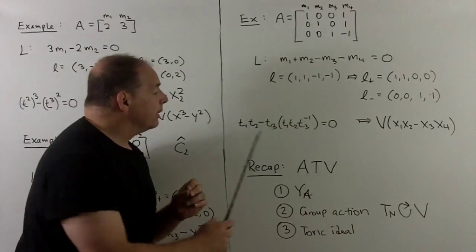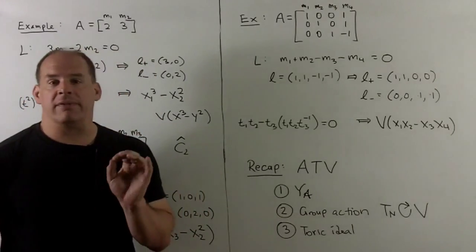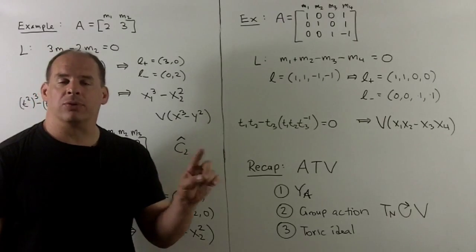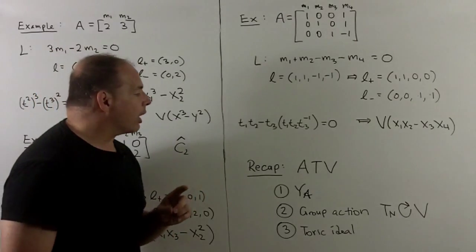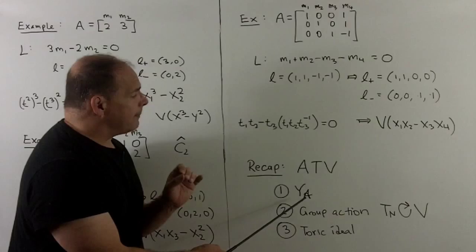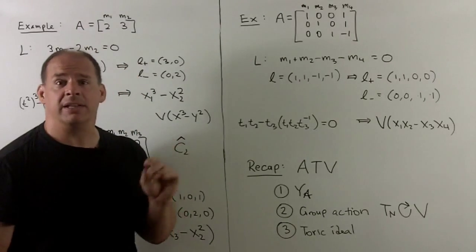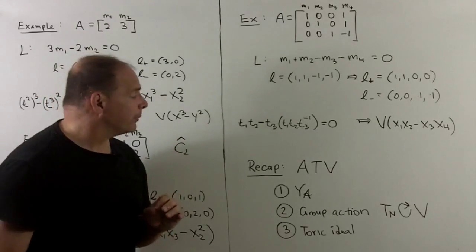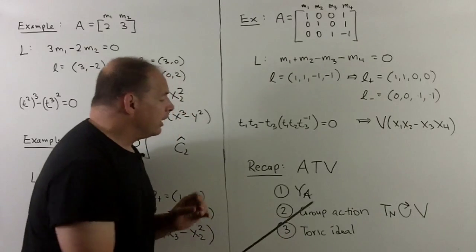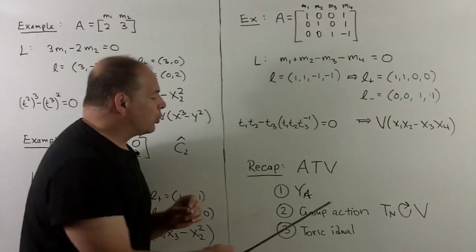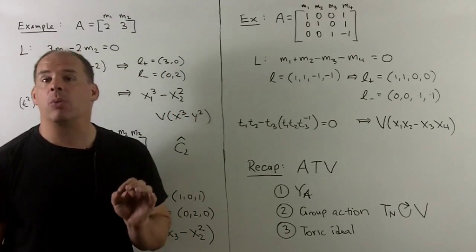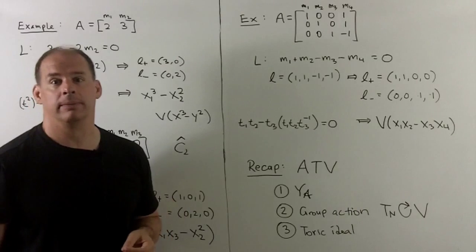To recap: if we have an affine toric variety, we have three ways to characterize it so far — as Y_A (the Zariski closure of the image of φ_A), by the group action definition (T_N acts algebraically on V), and by toric ideals. In the next part, we're going to have yet a fourth way.